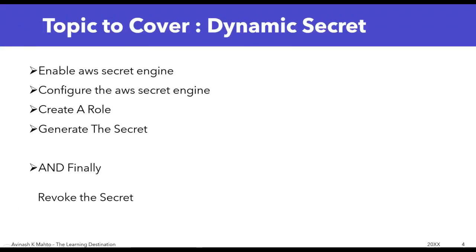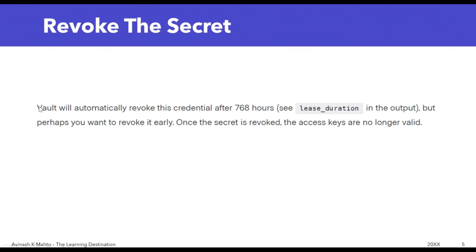We have just seen how to revoke the secret. Vault will automatically revoke these credentials after 768 hours, which we saw the moment the secret was generated. And if you want to revoke it earlier, you can do so using the 'vault lease revoke' command as demonstrated. Once the secret is revoked, the access keys are no longer valid, and the user has already disappeared from the AWS console.